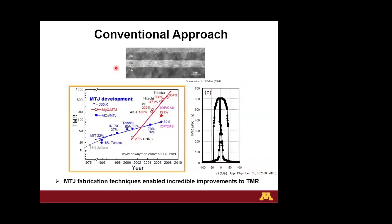Here is a map showing the evolution of the TMR ratio over the years with different material choices. The first measurement in 1975 was by Julliere using a germanium barrier. Blue symbols show the evolution with aluminum oxide barriers, reaching up to about 80%. Around the 2000s, the gigantic TMR due to MgO symmetry filtering skyrocketed the TMR ratio, with the largest room-temperature value of 600% obtained by Ikeda in 2008.